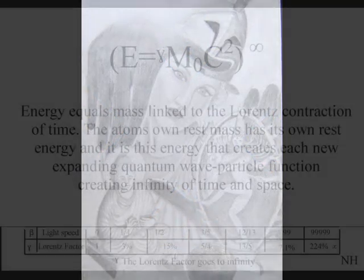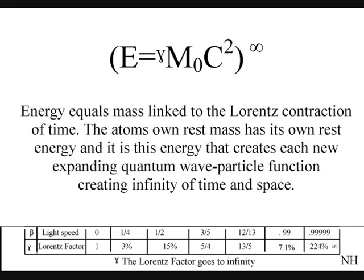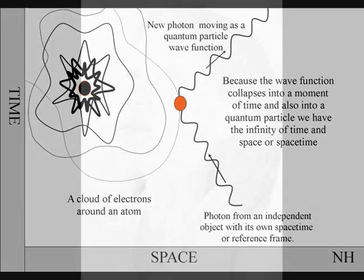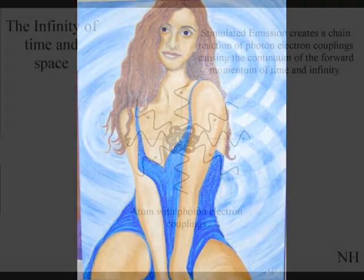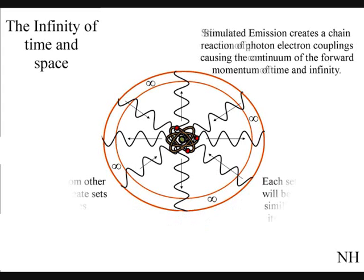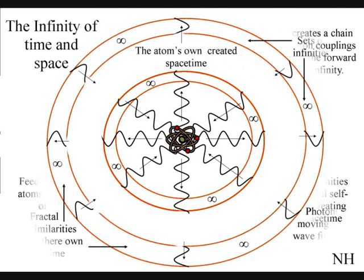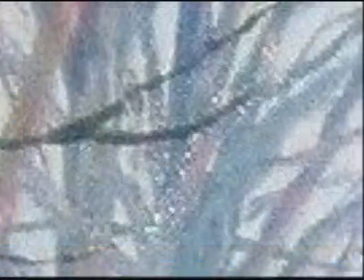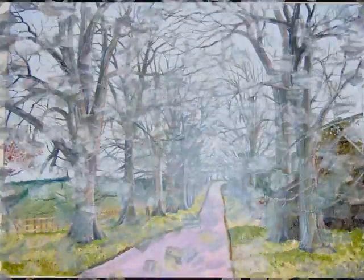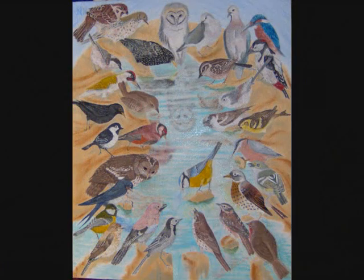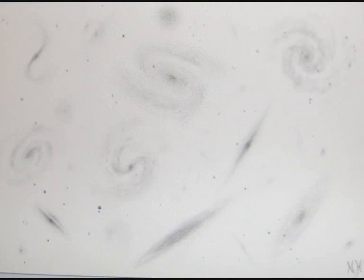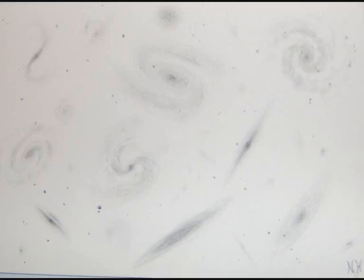In quantum atom theory, infinity is not a mathematical paradox, but an actual reality of our universe. Because the wave function collapses into moments in time and also into quantum particles, we have the infinity of time and space. In this diagram of an atom surrounded by photon-electron couplings, feedback from other atoms will create sets of infinities. The reason why we can always divide infinity into sets of infinities is because of the continuous process of the wave-particle function collapsing into new quantum particles. Each set of infinities will be a set of fractional self-similarities, creating their own infinity of time and space. This can explain why there is no centre to or outer limit to our universe — there can be no centre or outer limit to infinity.